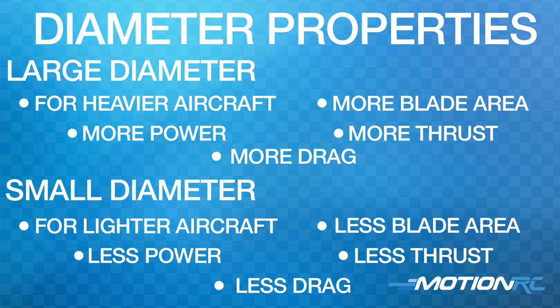Basically, as you see in this chart: large diameter, low pitch is good for thrust and slower for landings, and then lower diameter with a higher pitch is going to be much better for speed. So it's really up to you.